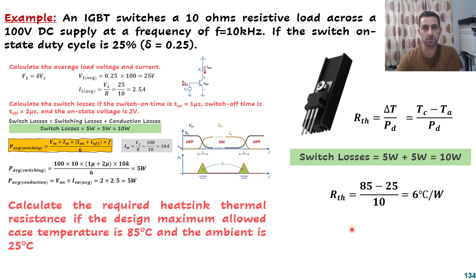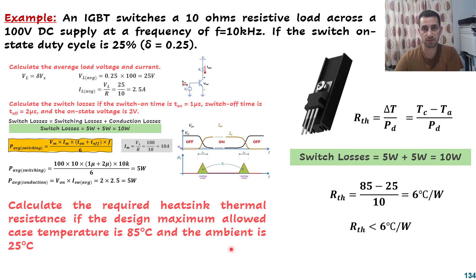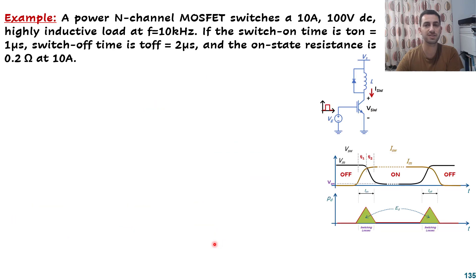So if we want to choose a heatsink, we have to select one with thermal resistance less than 6 degrees per watt. I advise you to stop the video and try this question by yourself, then return and check your answer, because trying by yourself gives you confidence.